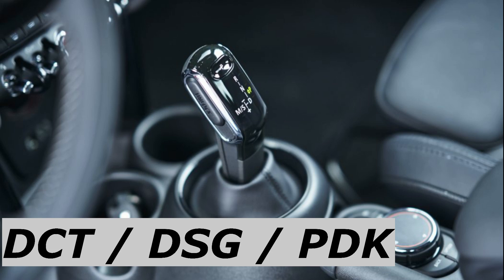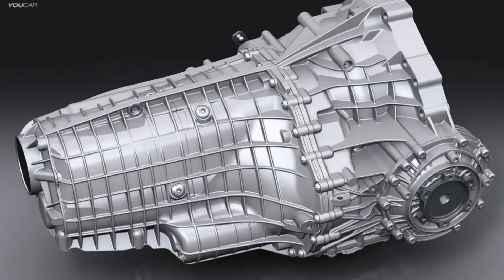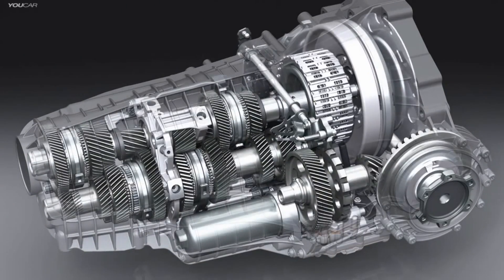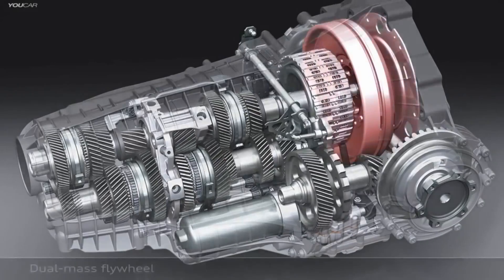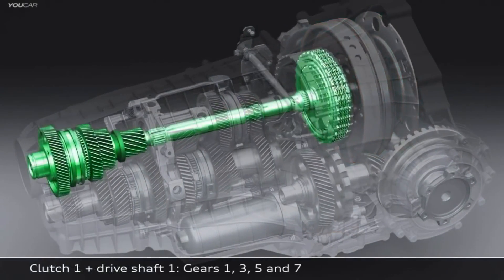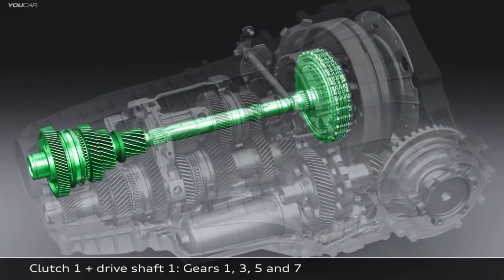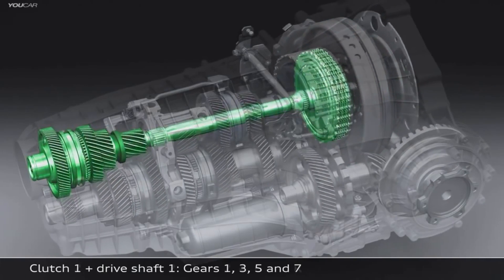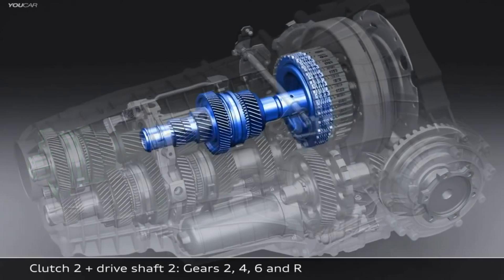Fourth type of transmission is DCT, dual clutch transmission. It is also called DSG, which stands for direct shift gearbox. In simple terms, think of it as two manual transmissions combined together. It has two clutches. One clutch set is connected to the odd gears, first, third, and fifth, and the second clutch set is connected to even gears, second, fourth, and sixth.